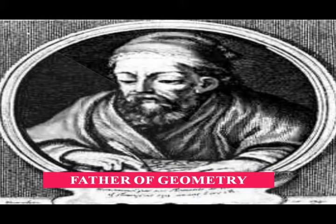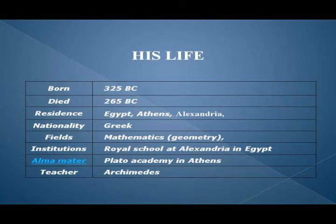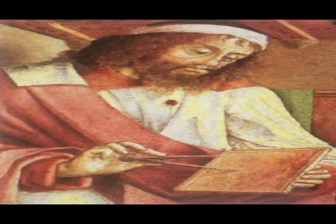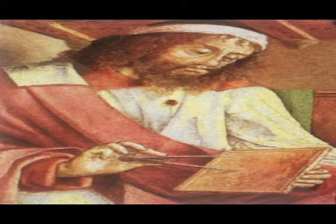Euclid, best known for his treatise on mathematics, Elements, was born about 325 BC. Little is known about his life except that he taught mathematics about 300 BC in royal school at Alexandria in Egypt that had been founded by Ptolemy.